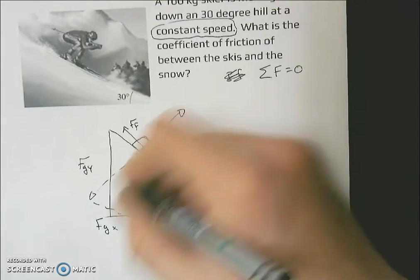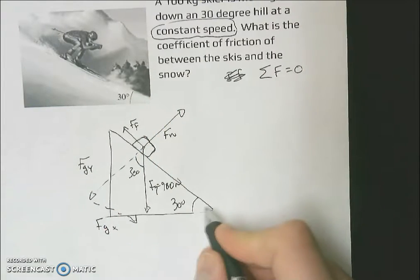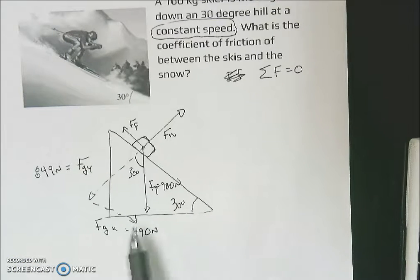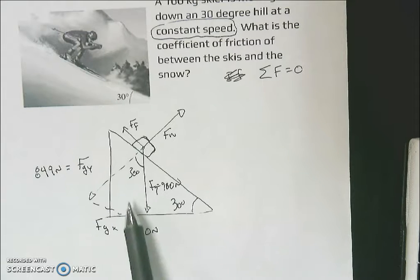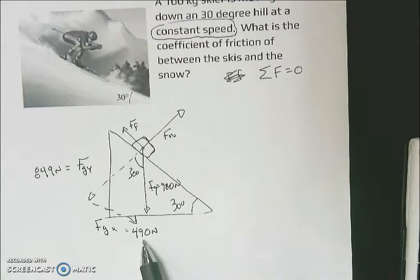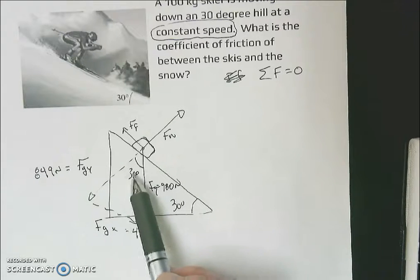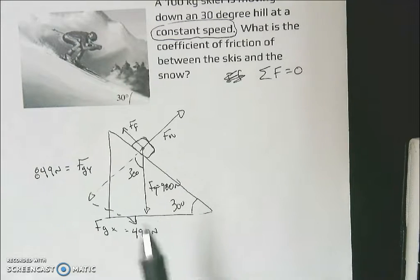Now that we have those, I have to use trig to solve for anything I can solve for in this triangle. That's going to be 30 degrees. I'm going to use sine and cosine to solve for these two forces. I use the sine function to solve for the force of gravity in the x direction. It was sine of 30 times 980 to get 490. And then the cosine function to get my adjacent side. It was cosine of 30 times 980 to get 849.